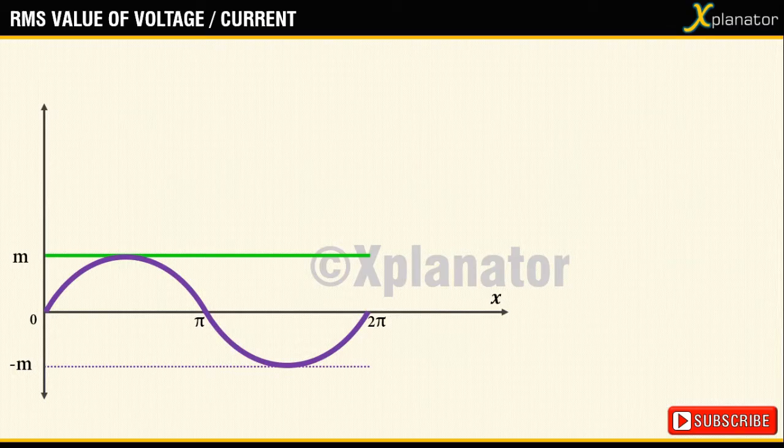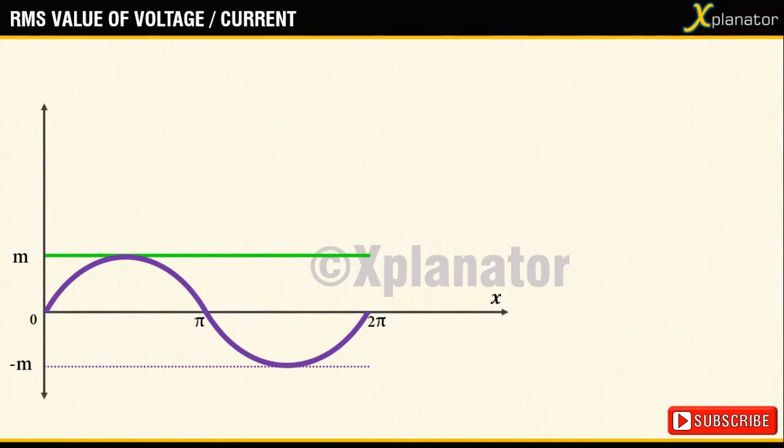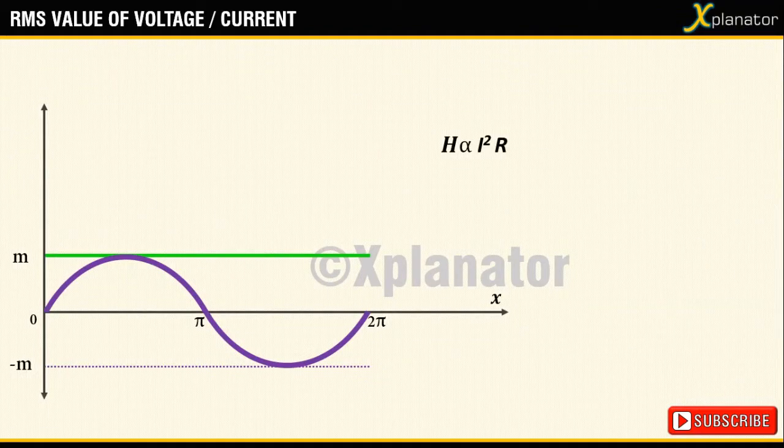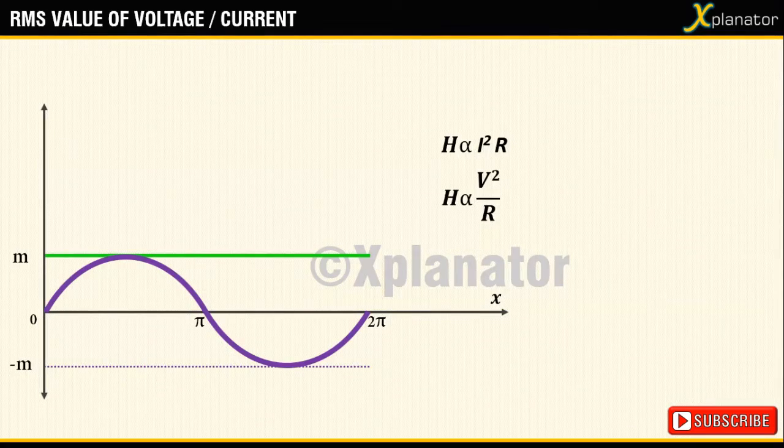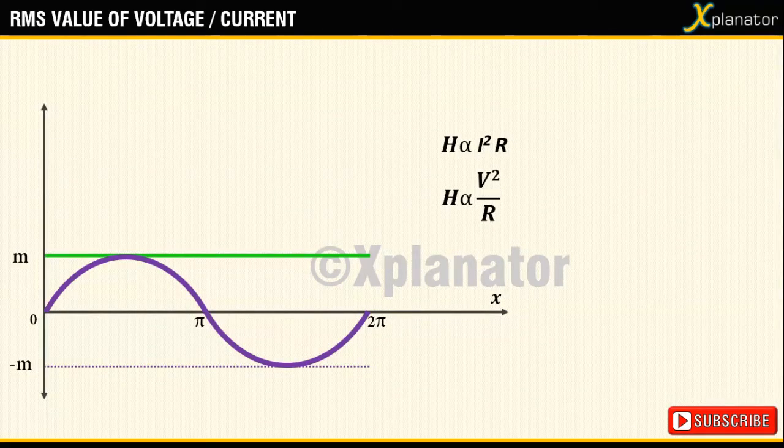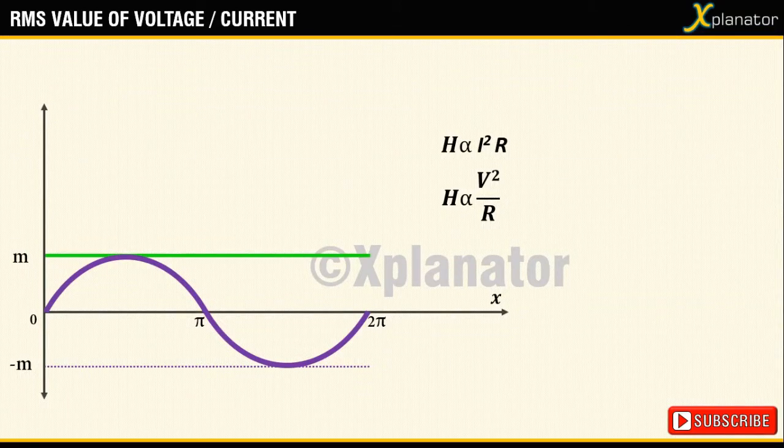This RMS parameter is related to heating property and heat produced in a conductor is given by i²R which can also be written as equal to v²/R. So no matter you consider voltage or current, in either of the two cases you have to consider the square of the wave.